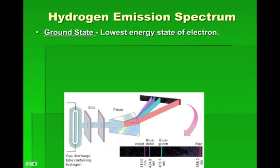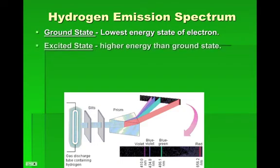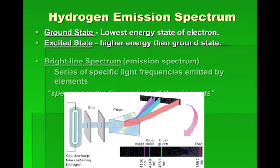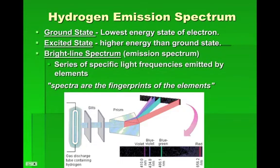Just a couple of definitions here — go ahead and write these down. Ground state is the lowest energy state of an electron, and excited state is when the electron has absorbed some energy and jumped up to a higher energy level.